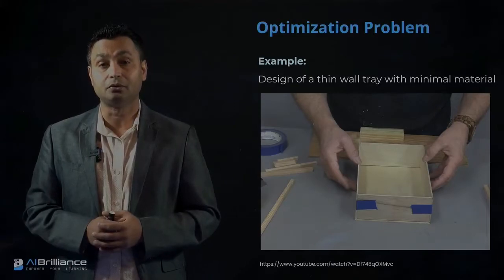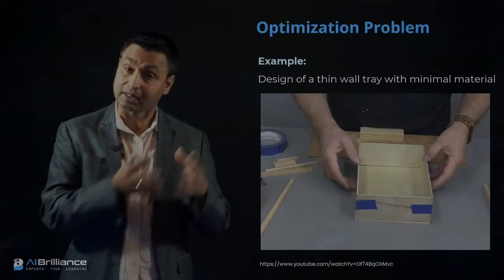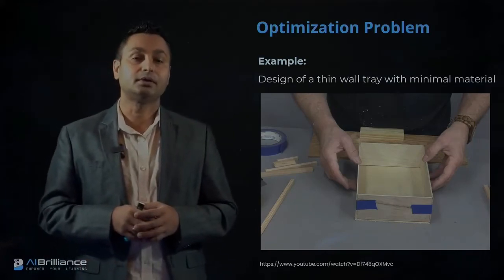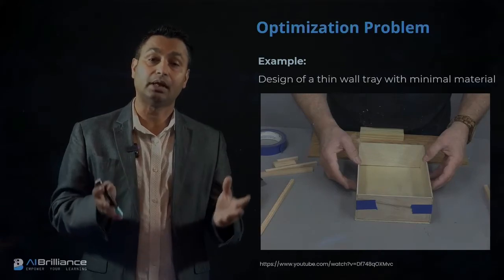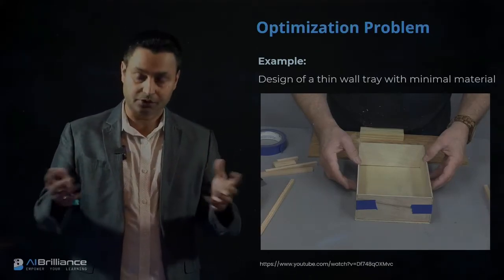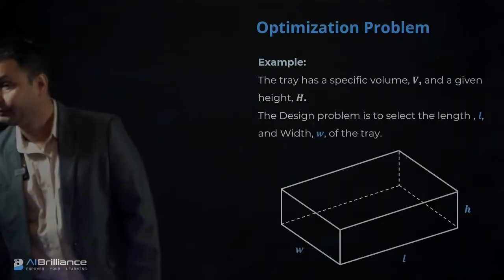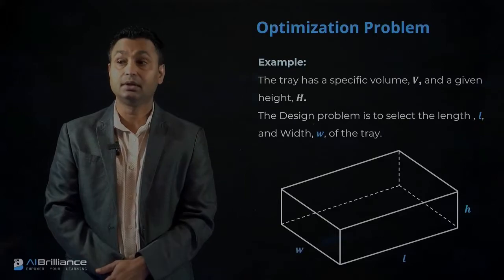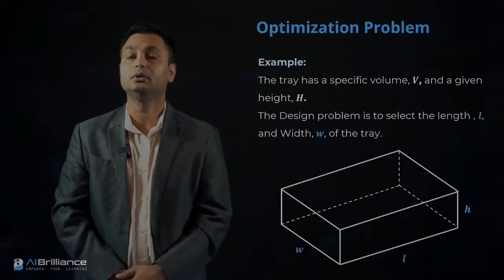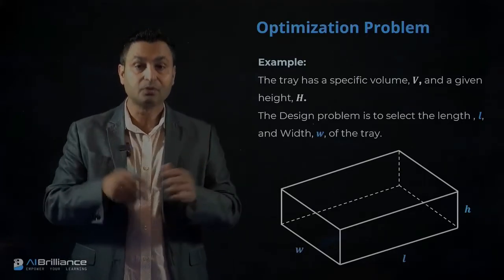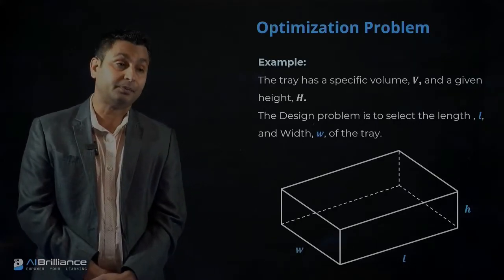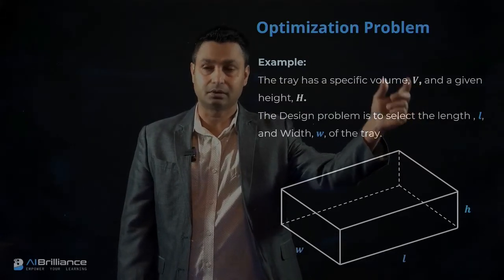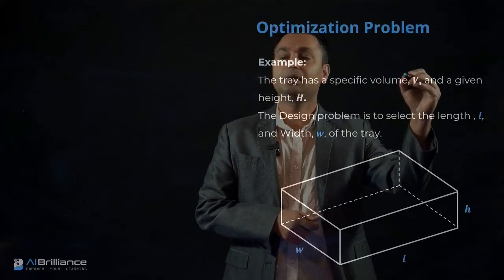The optimization problem we want to understand is helping this carpenter design and fabricate a drawer while minimizing the overall material used. This drawer will go into the housing project. One key constraint is that the drawer must have a specific volume — for example, it must store one liter. So the volume V is fixed and has been specified by the contractor.